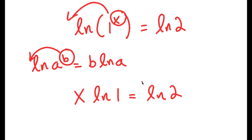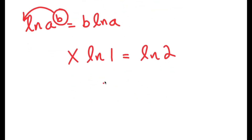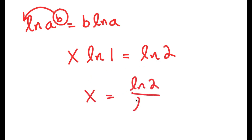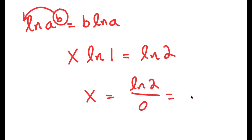You may be thinking we could just divide both sides by ln(1), and x would equal ln(2) over ln(1). However, the only problem with this is that ln(1) is equal to 0. And remember, anything divided by 0 is undefined. So this would be undefined.